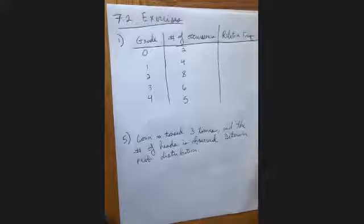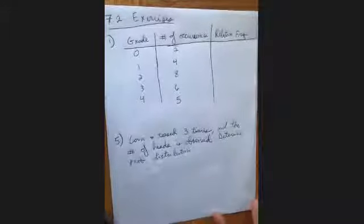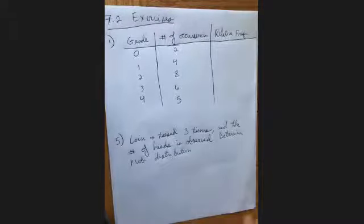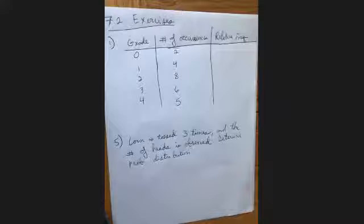I wanted to do a few more exercises for section 7.2, so I'm going to go over a few things just to give you a taste of how these problems work and some of the ways that you should think your way through it. These problems are coming directly from the back of the book — the numbers that go with them correspond to the numbers in the back of the book.